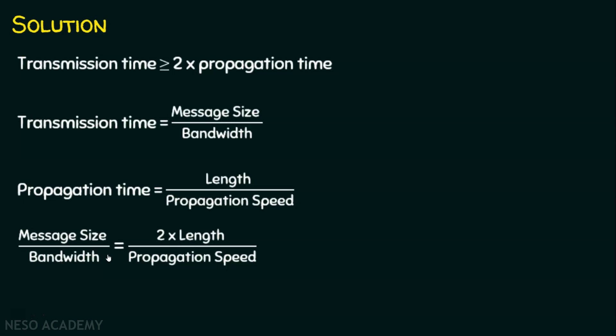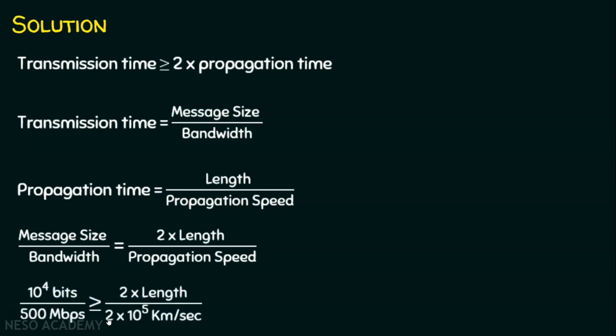We have four parameters: message size, bandwidth, length, and propagation speed. We need to find the length only; the other three are given. Substituting: message size is 10^4 bits, bandwidth is 500 megabits per second, and propagation speed is 2 × 10^5 kilometers per second.